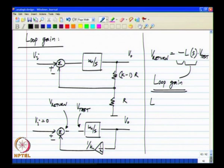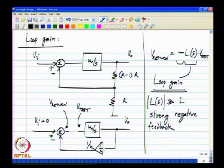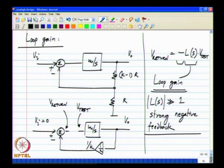If the loop gain is very large, there is strong negative feedback and the system behaves as you expect from the principles of negative feedback. For instance, when the magnitude of the loop gain is very large, the gain of the amplifier will be K. This happens for frequencies much smaller than omega u divided by K. Because of practical limitations, there will be frequencies where the magnitude of L of s is less than 1, and in this case there is weak feedback and the system will behave non-ideally. These are the things that we have learnt so far.